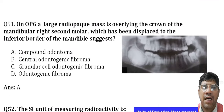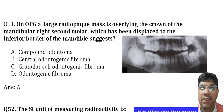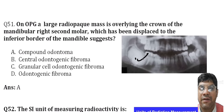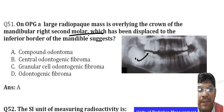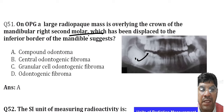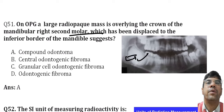On OPG, a large radiopaque mass overlying the crown of the mandibular right second molar which has been displaced to the inferior border of the mandible would suggest a compound odontoma. Odontomas are the most common type of odontogenic tumors, composed of dental tissue. A compound odontoma consists of small tooth-like structures and can cause displacement of the adjacent tooth. The answer is compound odontoma.